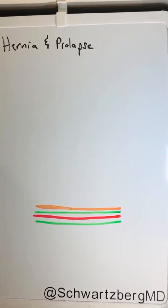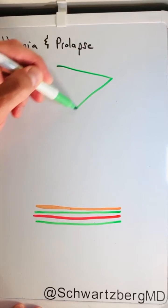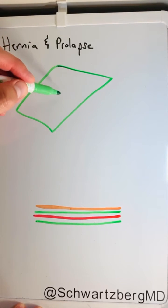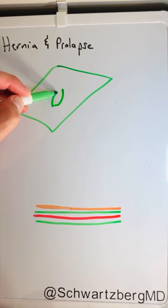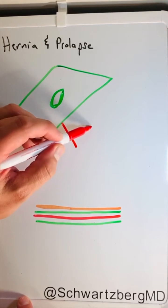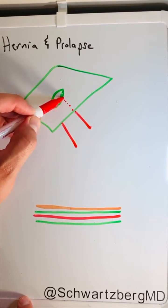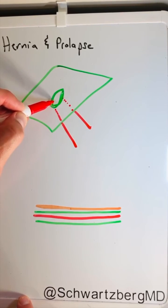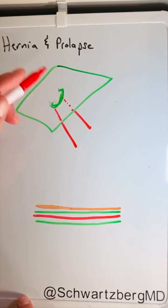I'm Dr. David Schwartzberg and let's talk about hernia and prolapse. If you remember from our last video, we talked about how we made a small slit in the fascia and eventually that slit becomes an oval. Through that, we're able to bring the bowel through and it comes out as a stoma.